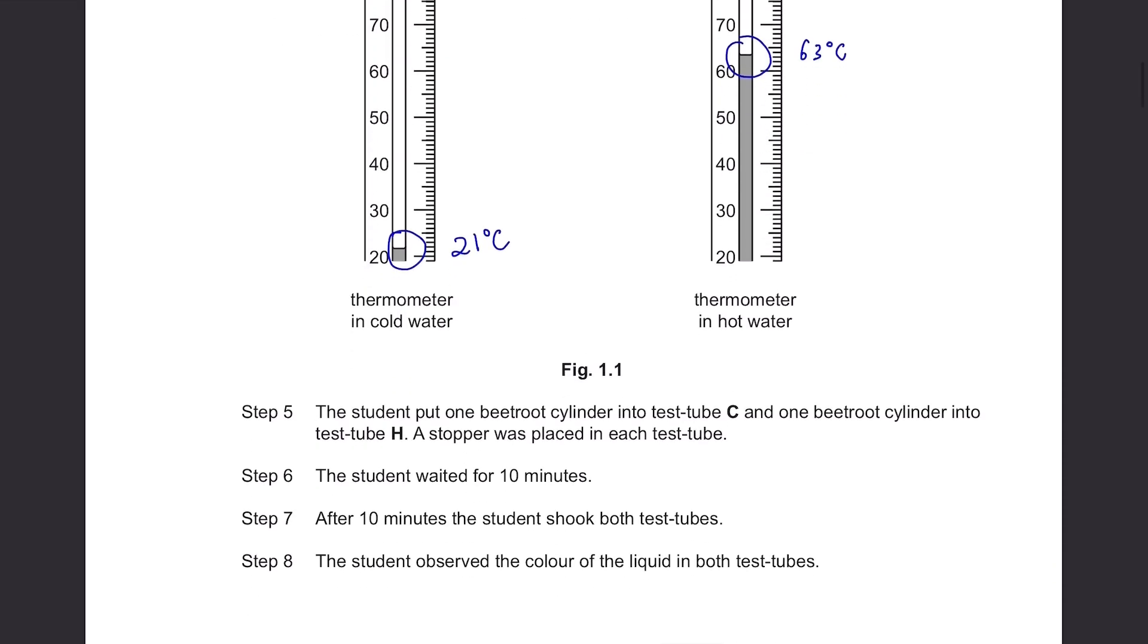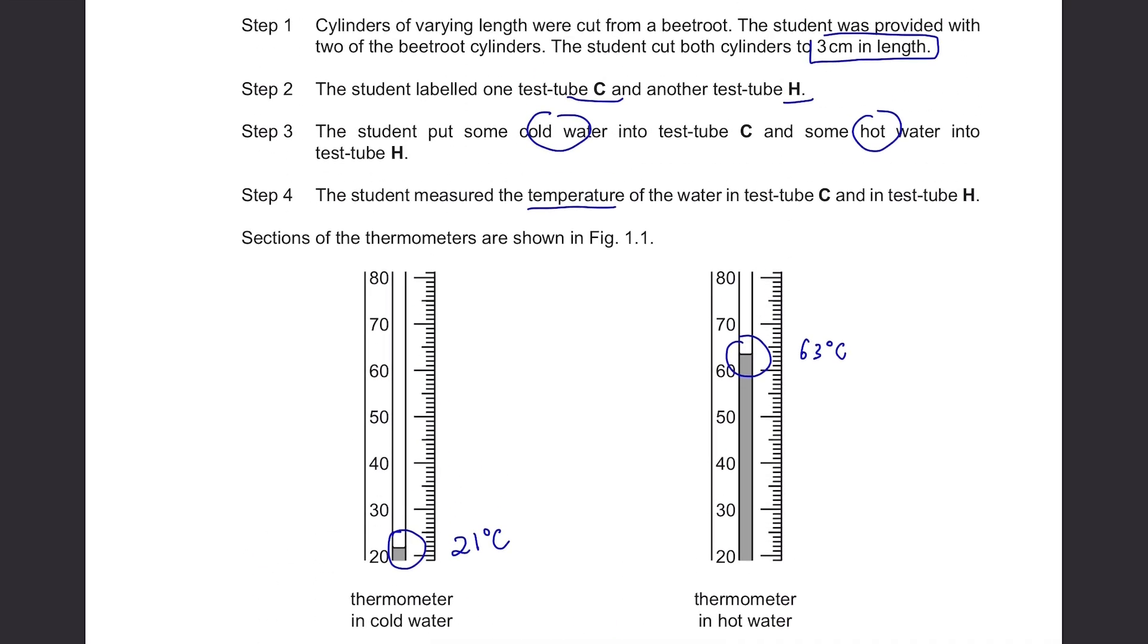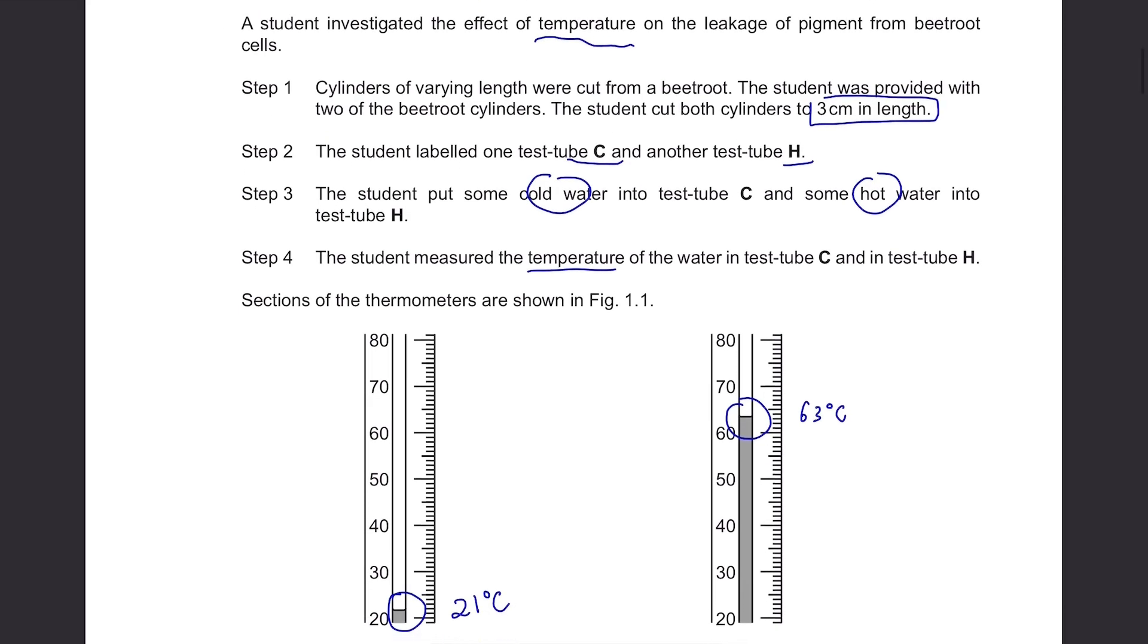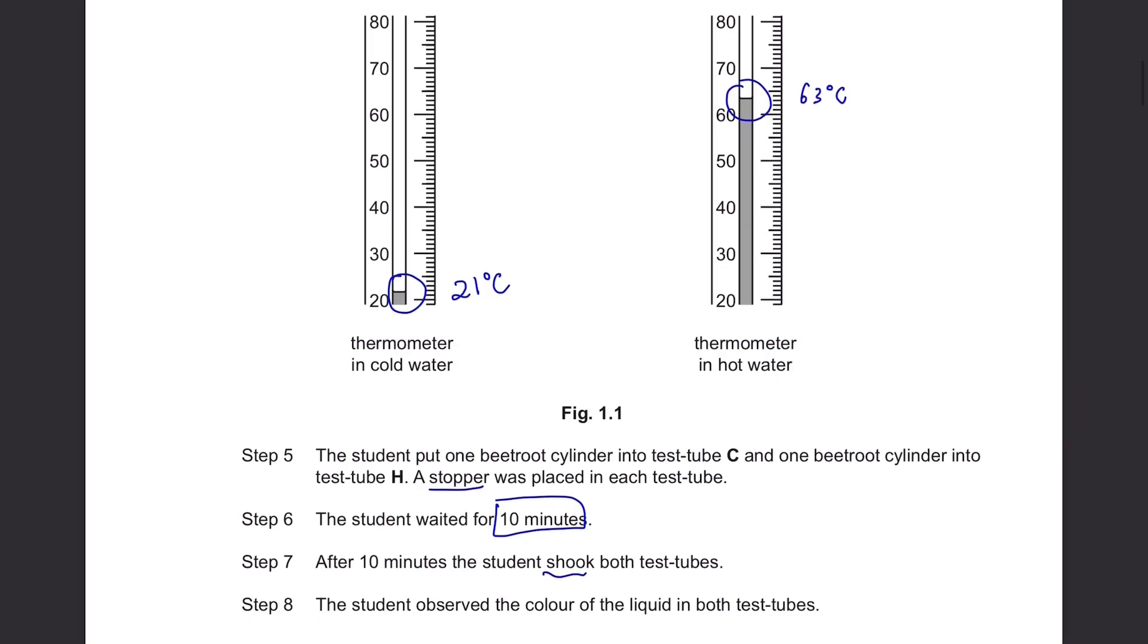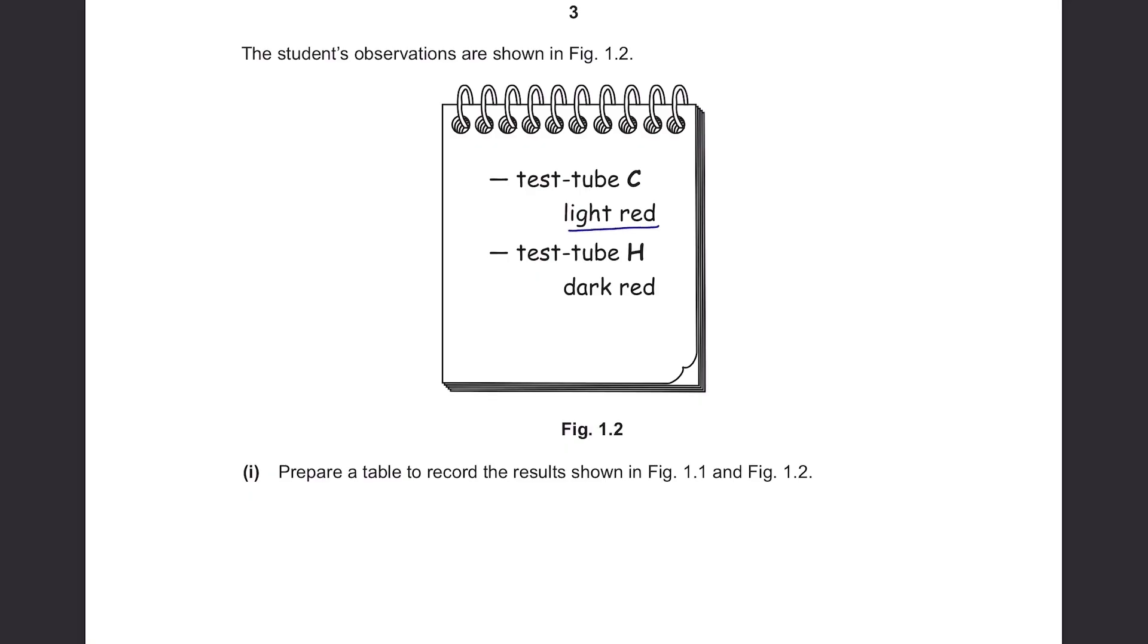Step 5: The student put one beetroot cylinder into test tube C and one beetroot cylinder into test tube H. A stopper was placed in each test tube. The student waited for 10 minutes. After 10 minutes, the student shook both test tubes. The student observed the color of the liquid in both test tubes. So they've cut the beetroot so there would have been a leakage since the cell membranes are damaged and the color pigments would have escaped and changed the color of the water from colorless to red. But the difference was that one test tube was cold and the other one was hot. The student's observations are shown in figure 1.2. Test tube C, it's light red. Test tube H, it became dark red.